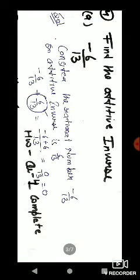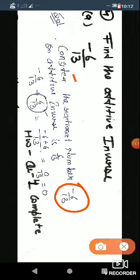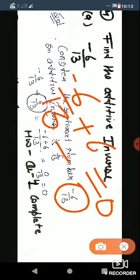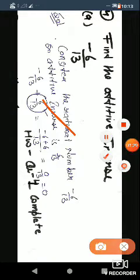Question number 4 from your book: find the additive inverse. The rational number is minus 6 by 13. You need to consider this rational number — what number should be added to it so that your answer becomes 0? You will add 6 by 13. So 6 by 13 is your additive inverse answer.